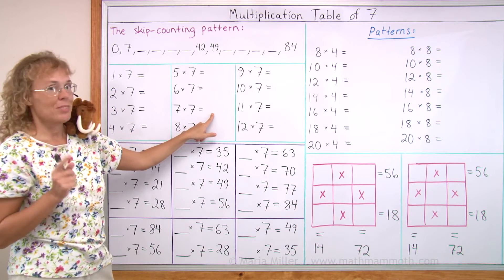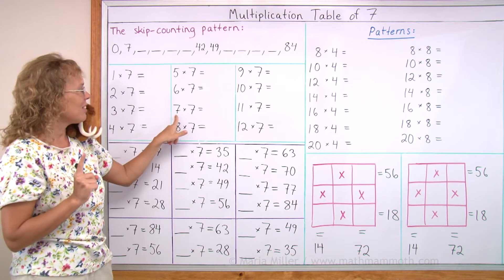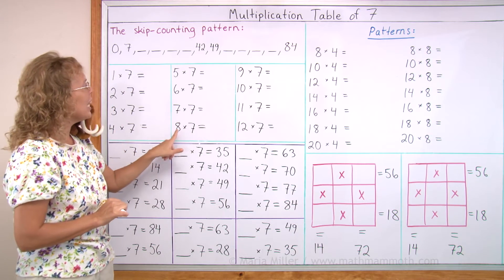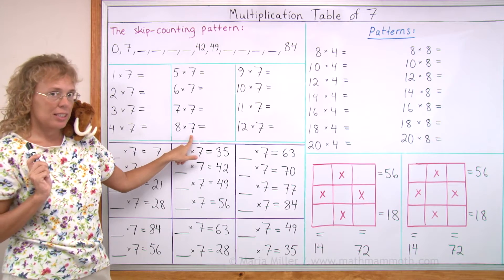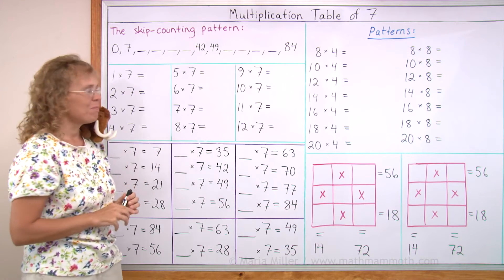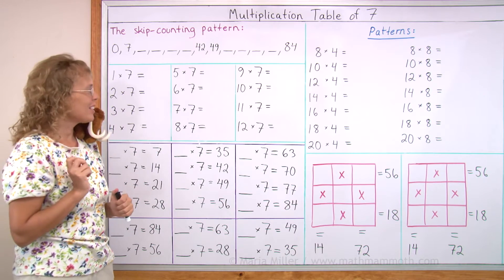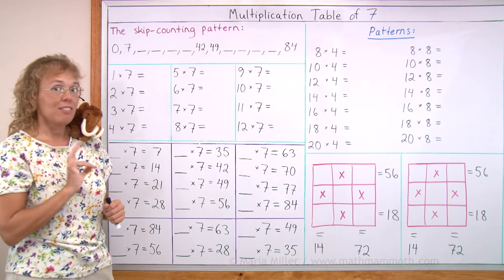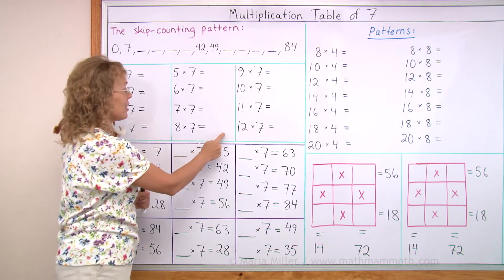Then this one is a new one, 49. 7 times 7 is 49, just 1 less than 50, okay? 8 times 7 is 56. And I'll show you a little rhyme for it. You surely can remember 5, 6, 7, 8, right? 5, 6, 7, 8. 56 is 7 times 8.